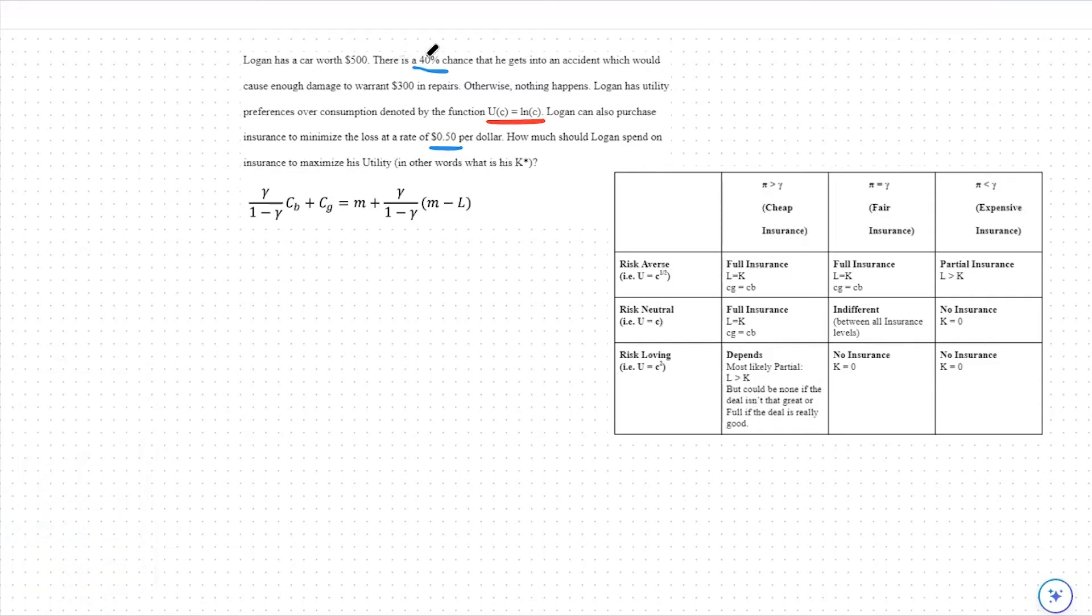Let's compare first our probability of the loss versus our premium per dollar of insurance. In this case, we have a 40% chance of the loss, but a 50 cent premium per dollar of insurance. This means we have expensive insurance, so we will be on the rightmost column.